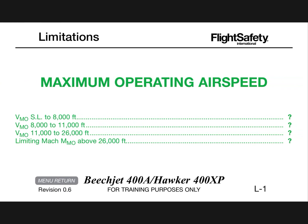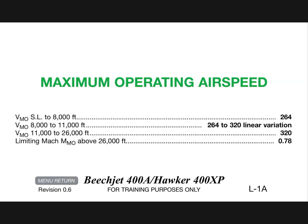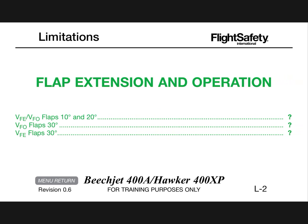Limitations — maximum operating airspeed: VMO sea level to 8,000 feet is 264 knots. VMO 8,000 to 11,000 feet is 264 to 320 linear variation. VMO 11,000 to 26,000 feet is 320 knots. Limiting MMO above 26,000 feet is 0.78.